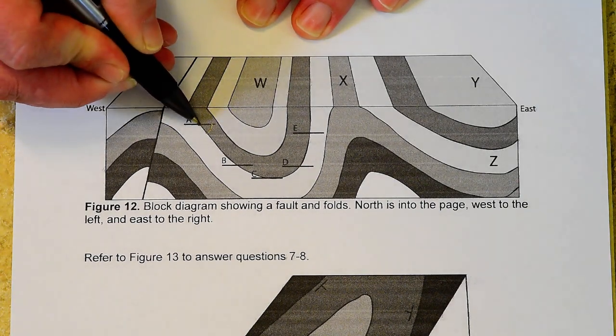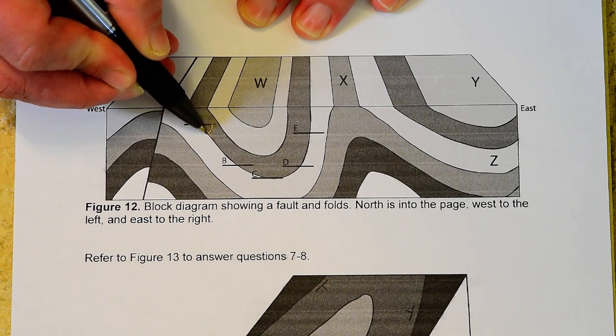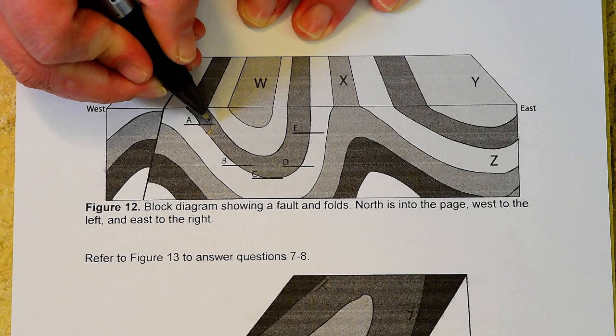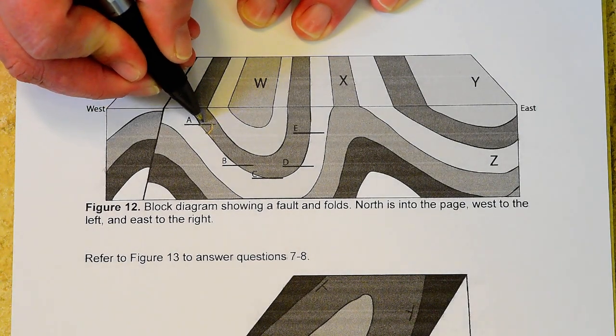So we're measuring the angle of this rock layer right there. Okay, so there's horizontal, it's dipping downwards. I'm going to estimate this at 60 degrees.